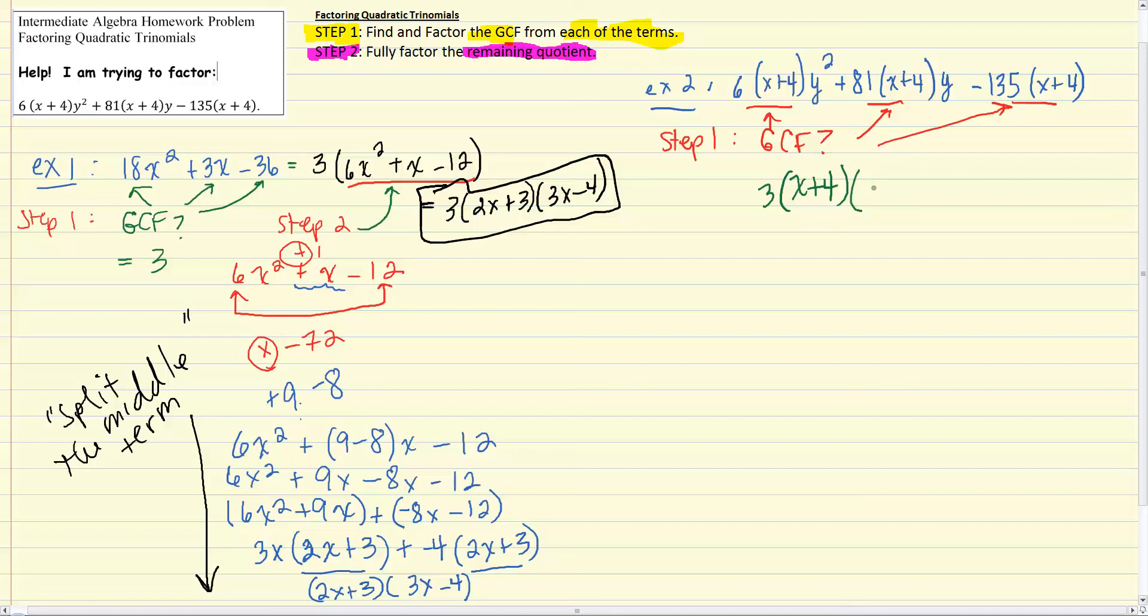And that's going to leave us with 2y squared plus 27y minus 45. And so from there, we're in good shape because we are on to step 2, which is just to factor the remaining quotient there. And so what we have is a problem that's very similar to just the one that we worked on over here, on the last problem. We're looking for factors of 2 times negative 45, which is negative 90, that add up to 27.